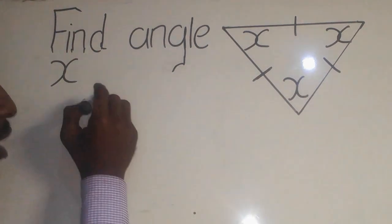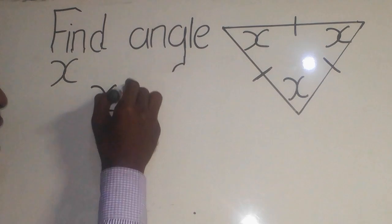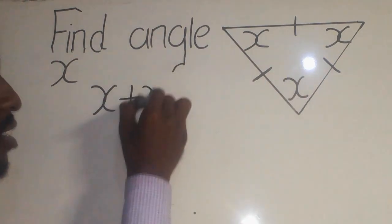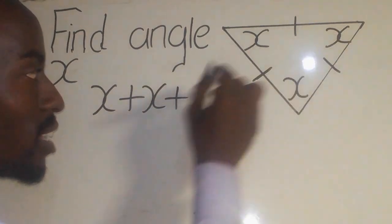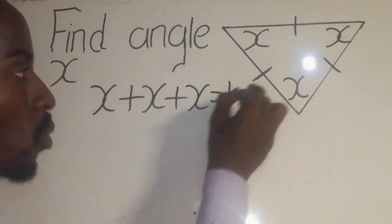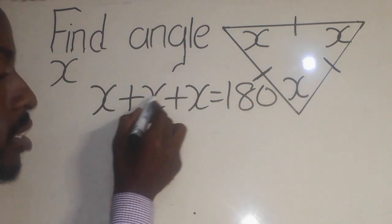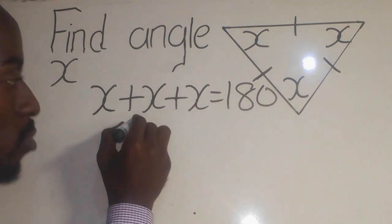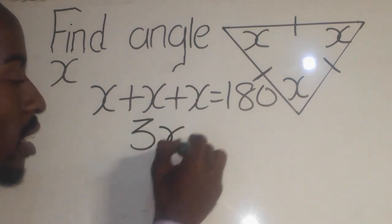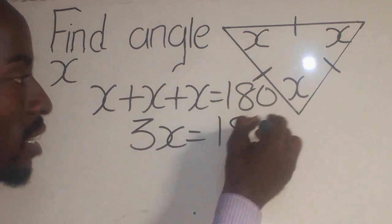So we're going to say x plus this x plus this x equals 180. So x plus x is 2x, plus x will give me 3x equals 180.